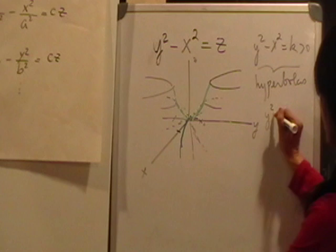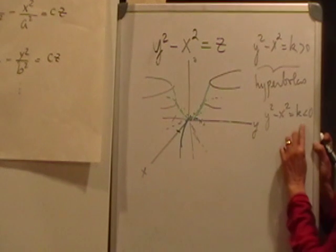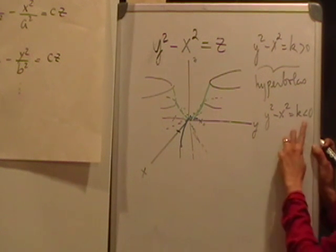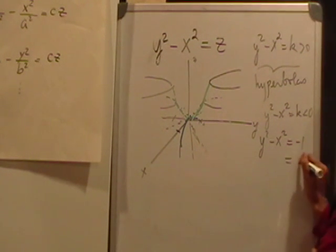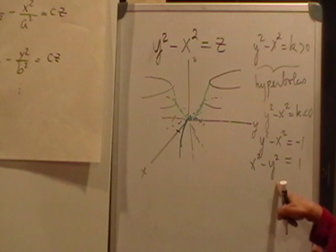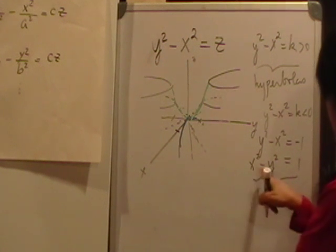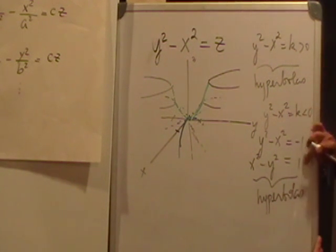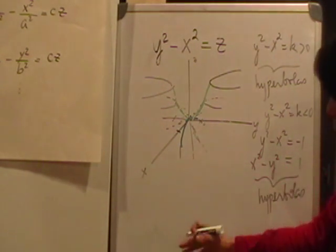Now let's look at what happens when k is negative — moving down the z-axis. For example, y squared minus x squared equals negative one. Rewriting, we get x squared minus y squared equals one, which is again a hyperbola. As k becomes more negative, the hyperbolas get wider and wider going downward.